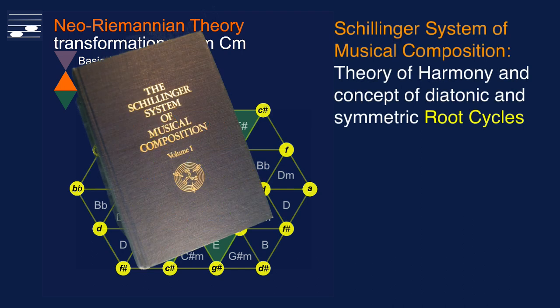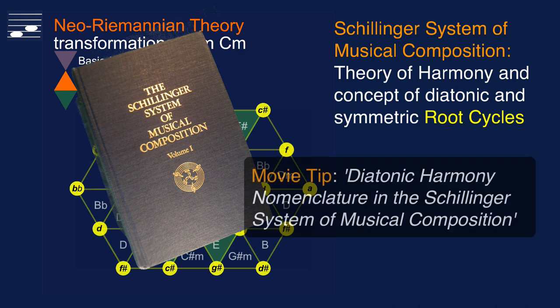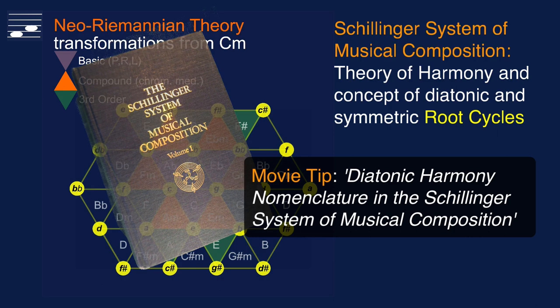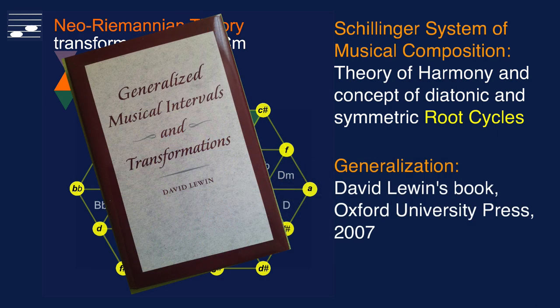An interesting aspect is the interpretation of these transformations in terms of the root movements in the Schillinger diatonic and symmetric harmony system. All my examples showed the corresponding root cycle patterns. If you're new to the Schillinger system you may want to watch this video on my channel. Another source, although highly academic and theoretical, is the book by David Lewin where there is also discussion of Neo-Riemannian theory.